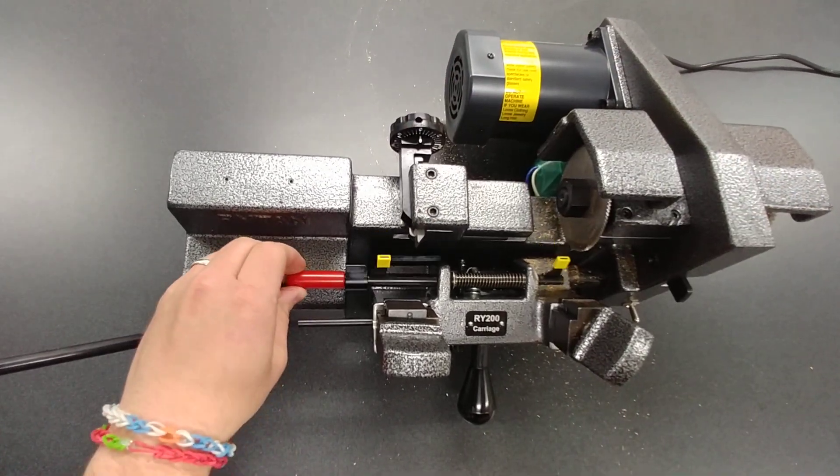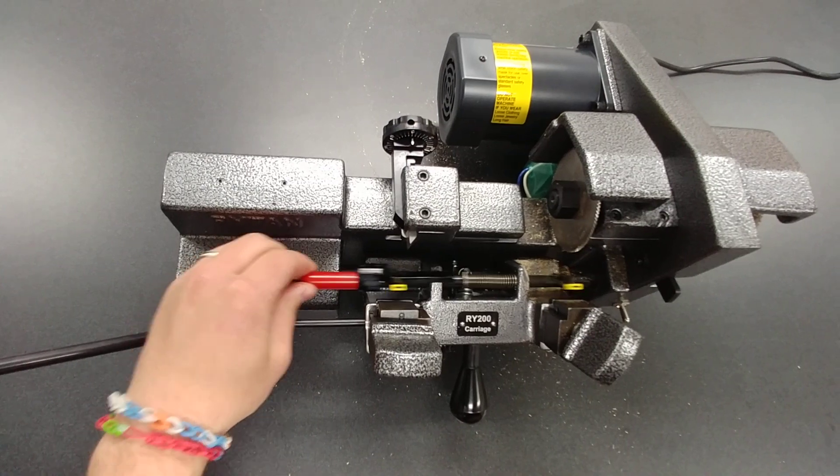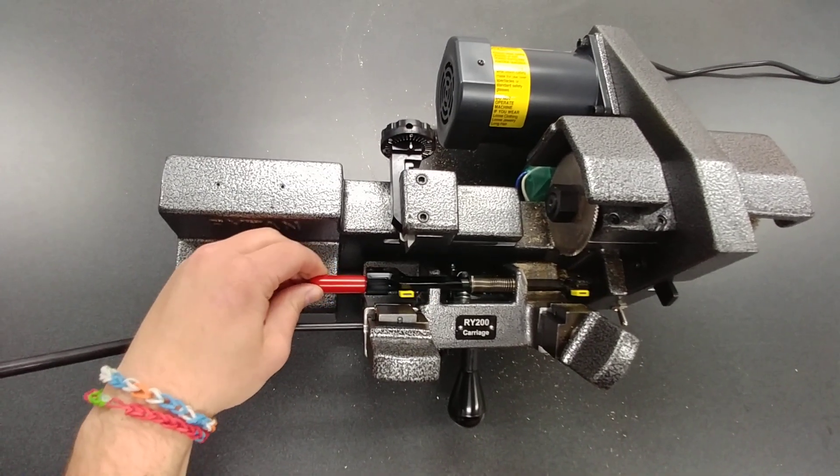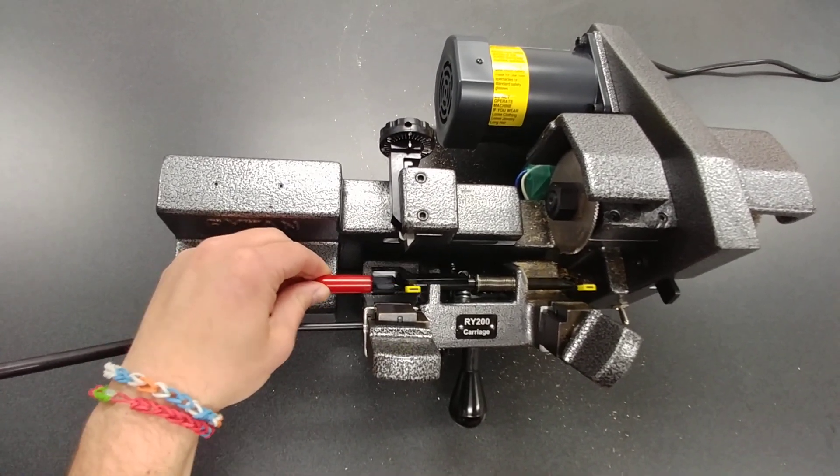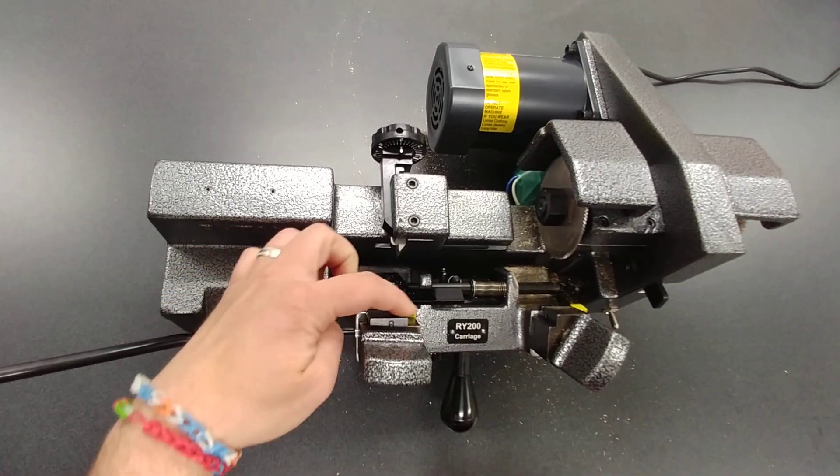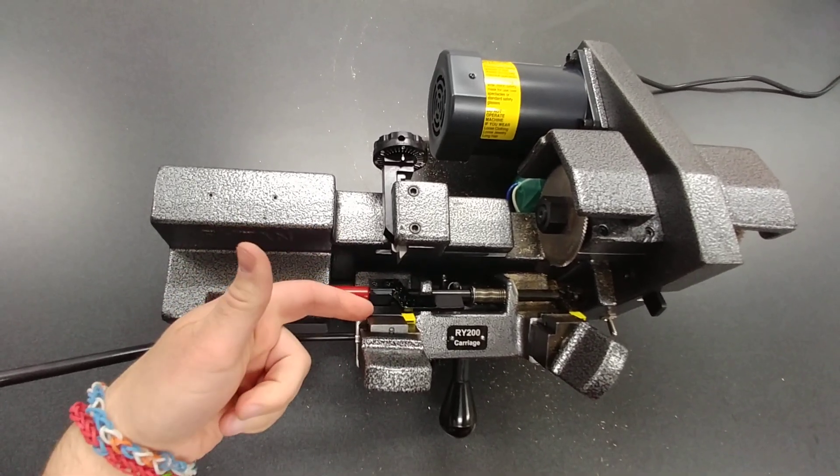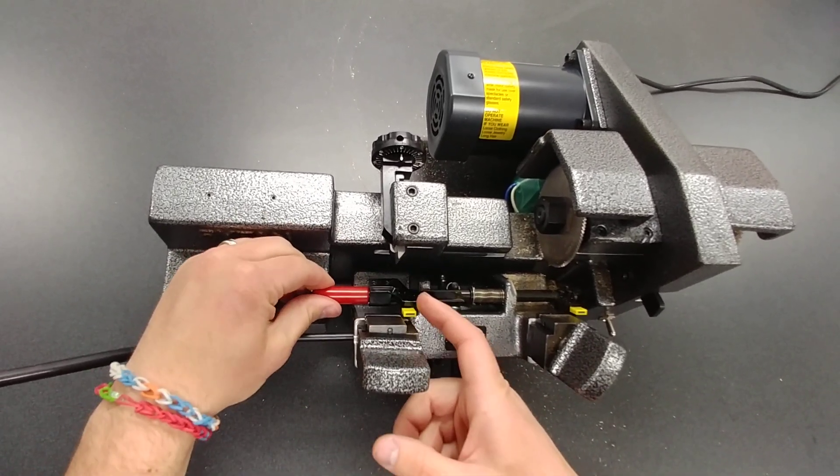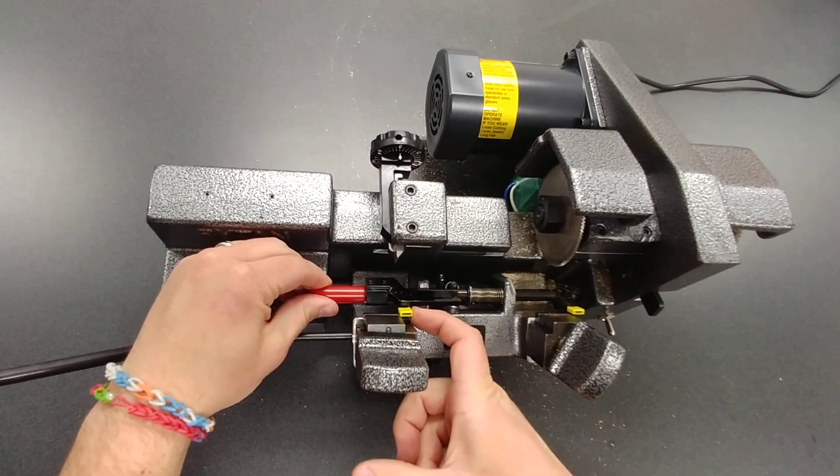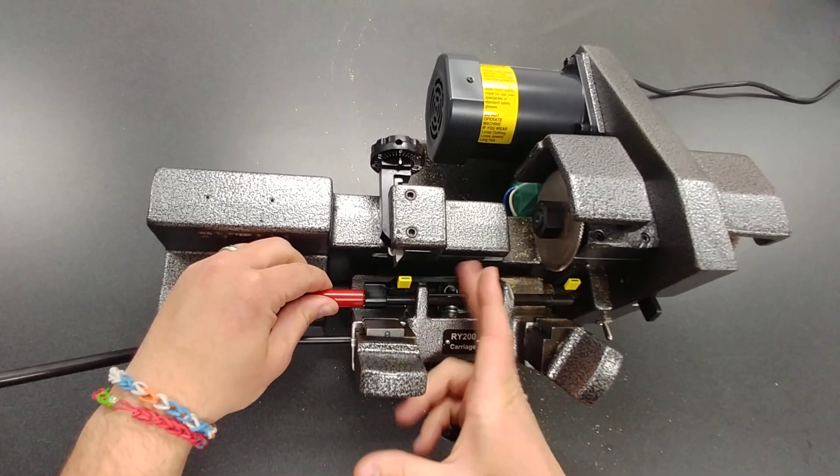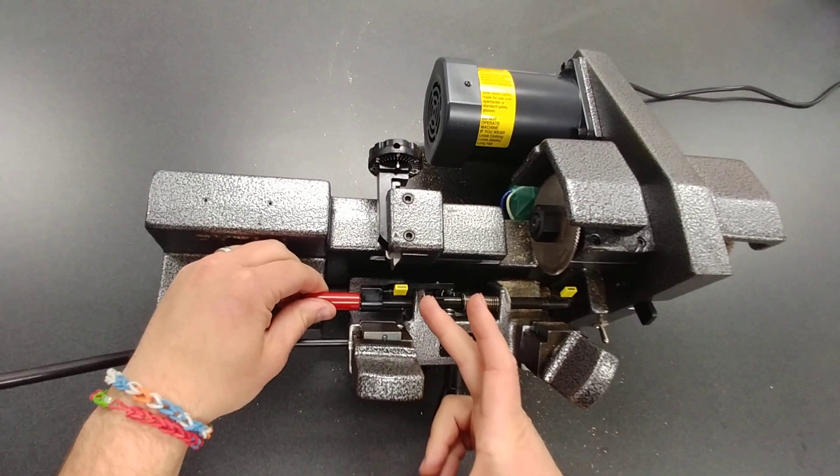Along with that, it also has this spring tensioned aligner that will accommodate both shoulder style keys and tip style keys. You can align it, put the tip style keys right in here and then you can align it right here on the tip. That's kind of uncommon for key machines that use this type of aligner.